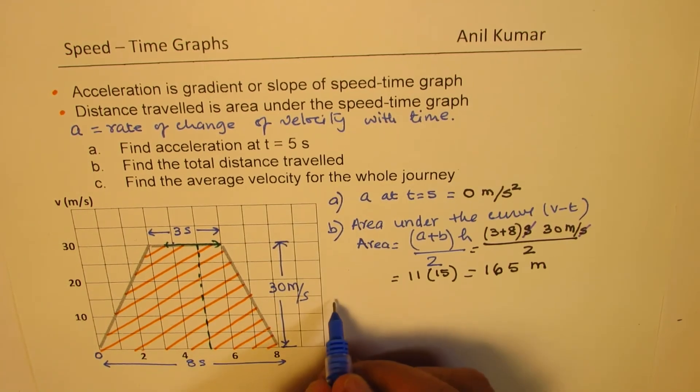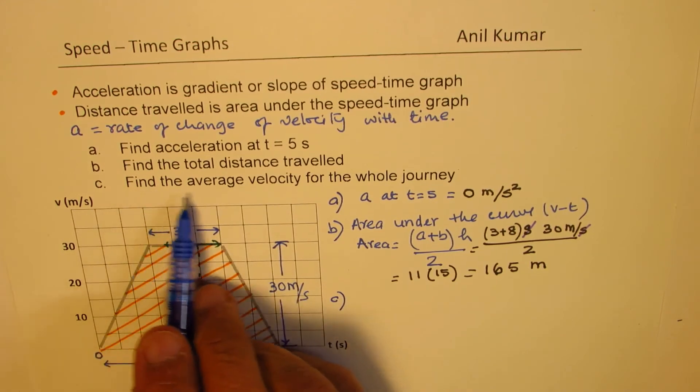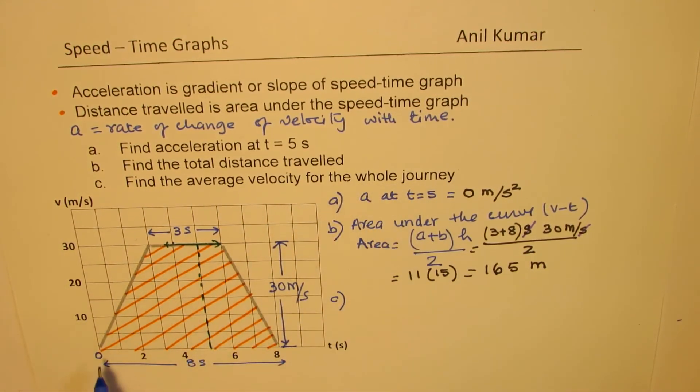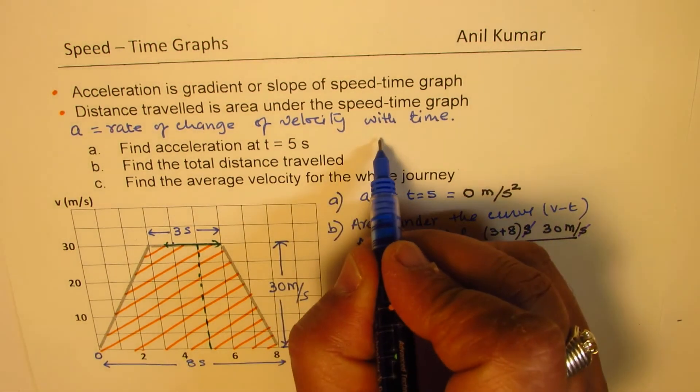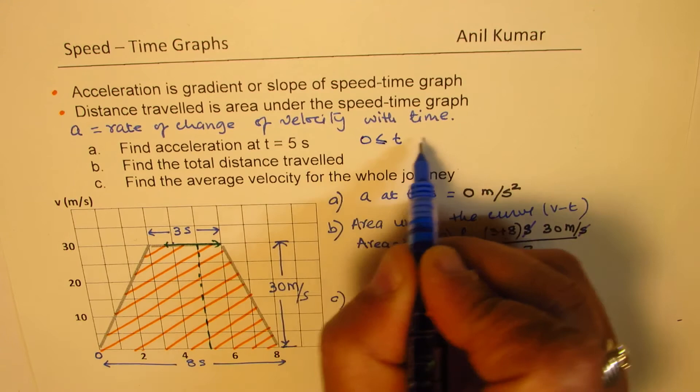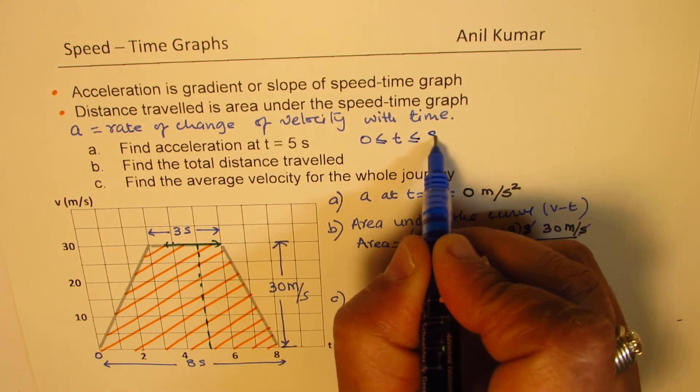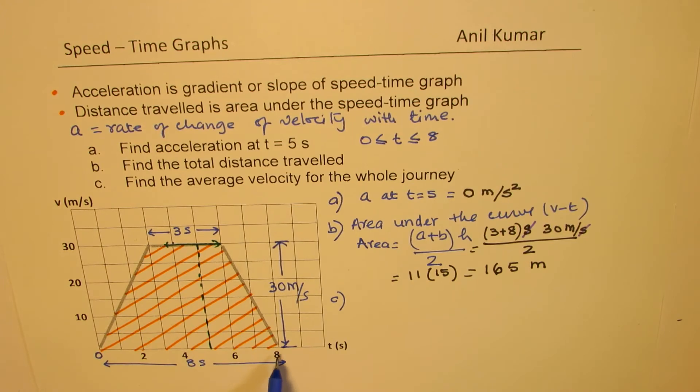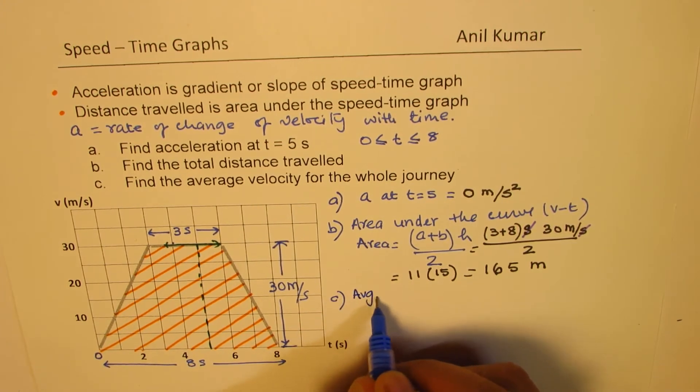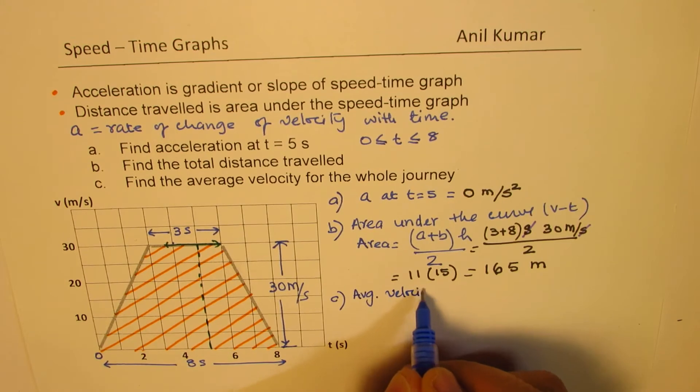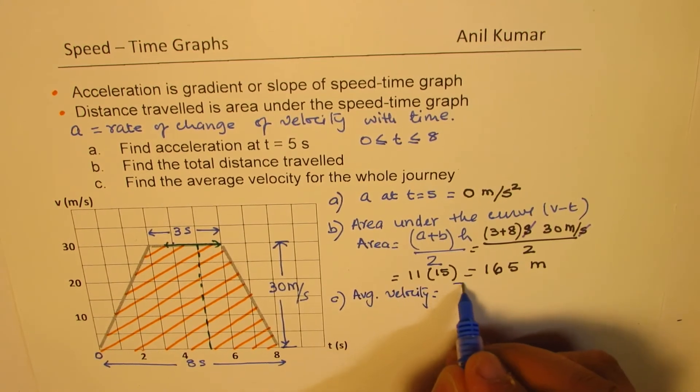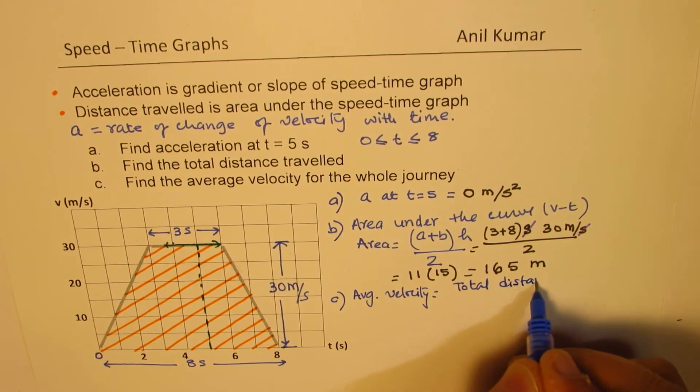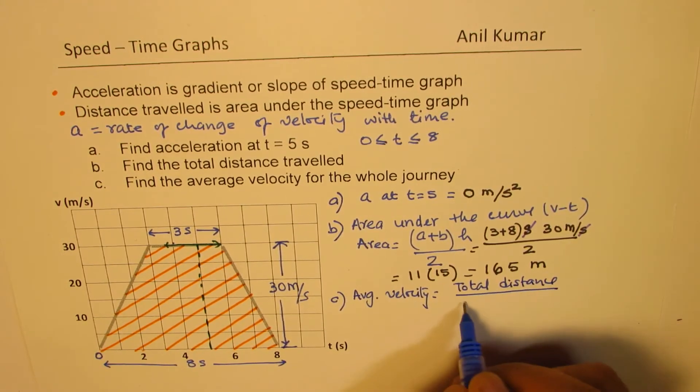Now let's do part c, which is find the average velocity for the whole journey. Now the whole journey, whatever we're talking about, is basically from t which is greater than or equal to 0 and less than or equal to 8.